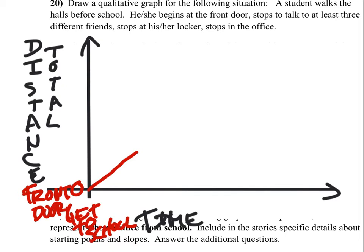Then they stop to talk to at least three different friends. Not that that seems to matter for this specific graph, but they're going to stop. So they're not walking any specific distance.